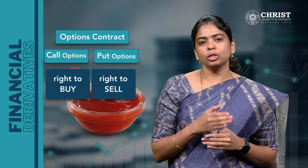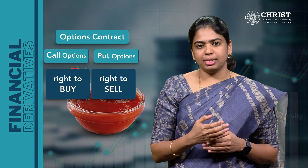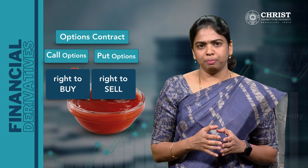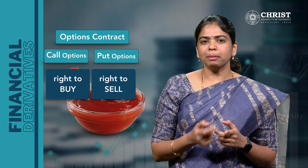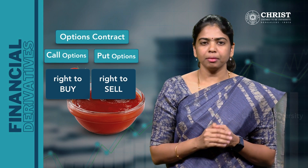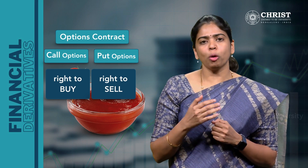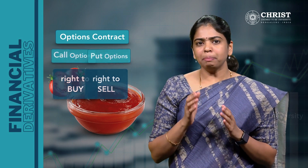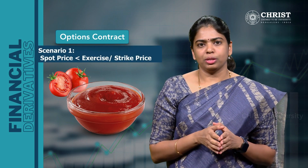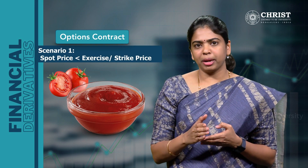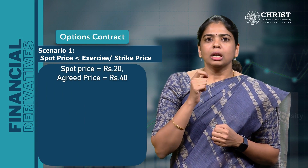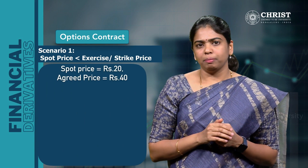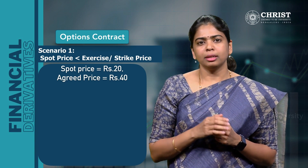The underlying asset in our example is tomatoes. Recalling the previous example: the call option gives a right to the buyer; therefore, the ketchup company who is a buyer has to buy a call option from the trader, which gives the company the right but not the obligation to fulfill the contract. In return for granting the option, a premium is collected from the option buyer. Let us say a premium of ₹3 per kg is paid by the buyer to the seller of the call option. Now, in scenario 1 where the spot price is less than the strike price — if the spot price on expiry is ₹20 per kg and the agreed strike price is ₹40 per kg — let us calculate the profit or loss incurred by both parties.